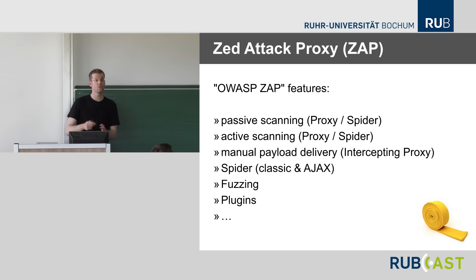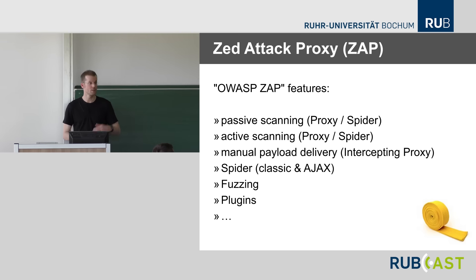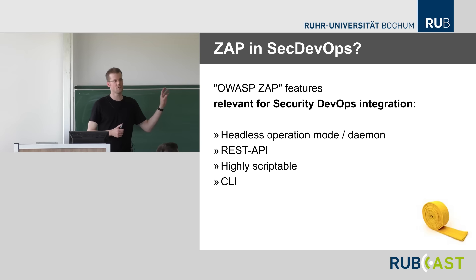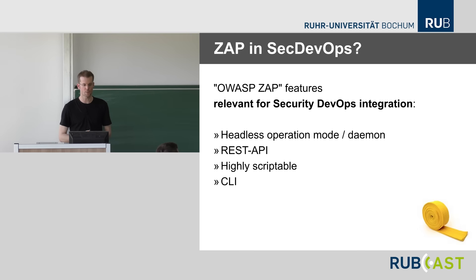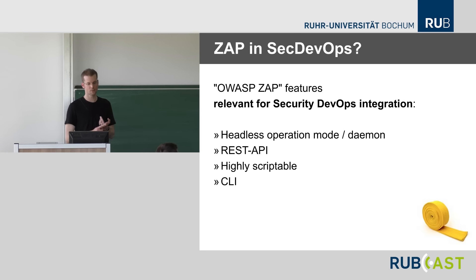Focusing on open source tools — there are good commercial ones too — we have OWASP ZAP, a very great tool for that. It has features like active and passive scanning, spidering of a web interface, good manual payload delivery, and some fuzzing. But the key features for Security DevOps are its headless operation mode — you can run ZAP as a daemon — and it has a very good REST API to remotely control that daemon during the build. It's highly scriptable and has a command line interface.